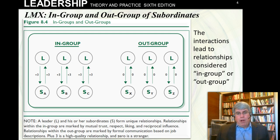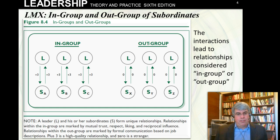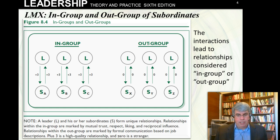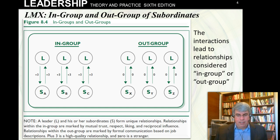We can look at all these vertical linkage dyads and say, aha, the leader has really good exchanges with subordinate A. When the leader talks to subordinate A, the subordinate benefits, and when the subordinate interacts with the leader, the leader benefits too. We're giving plus three to each arrow. The same thing with subordinates B and C — they all have real positive relationships. The leader forms a trusting relationship, the leader likes the subordinates, the subordinates tend to like the leader, they're open to influence from one another — they're good relationships.